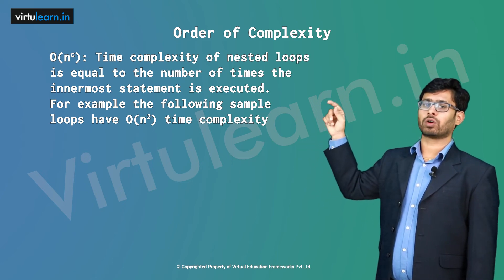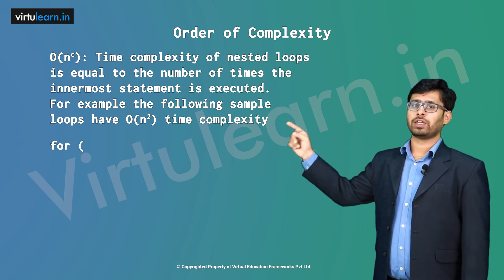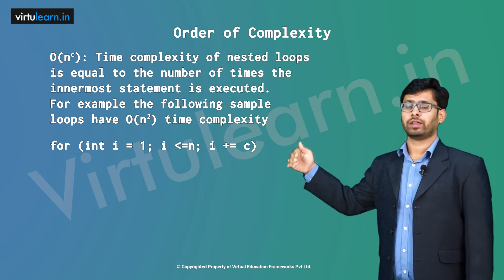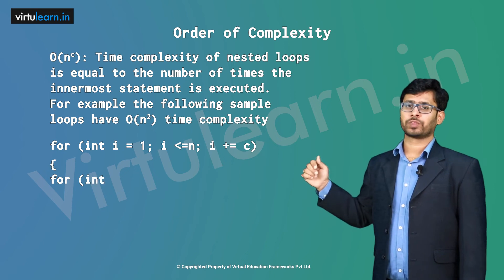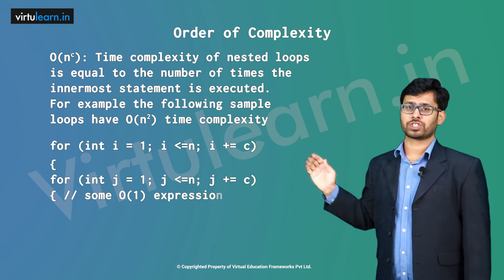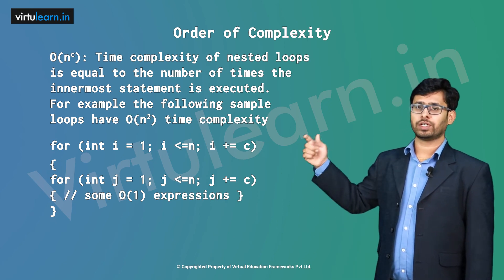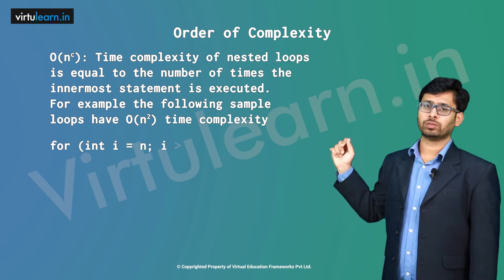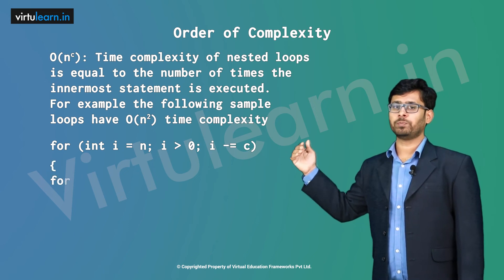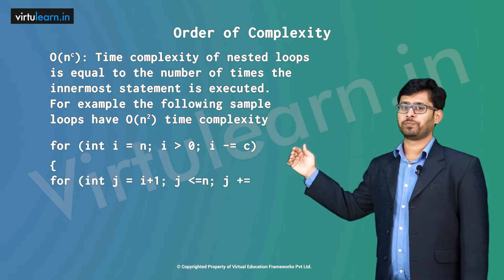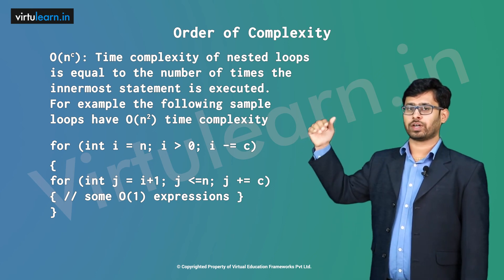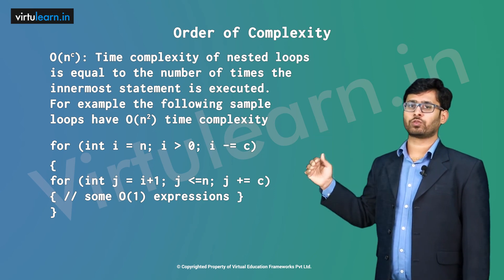For example: for(int i = 1; i <= n; i += c) with a nested for(int j = 1; j <= n; j += c) containing a sum of O(1) expressions. In the reverse case: for(int i = n; i > 0; i -= c) with an inner for(int j = i+1; j <= n; j += c) containing O(1) expressions. In both cases, the time complexity is O(n²).